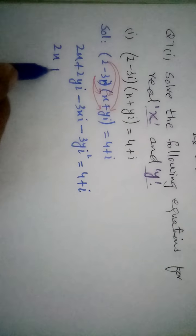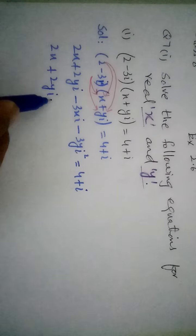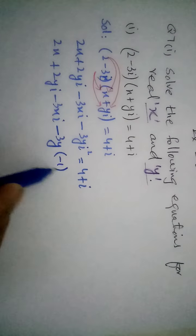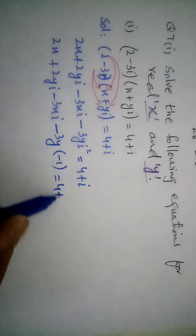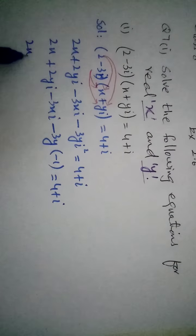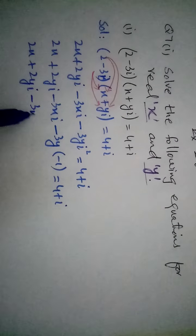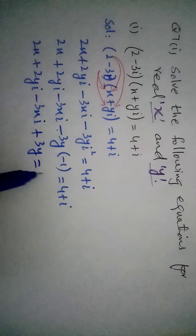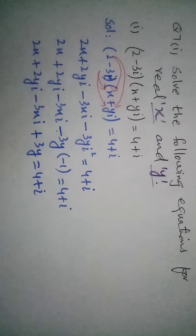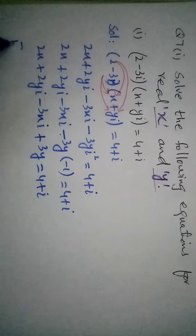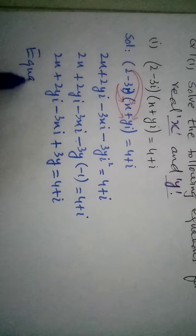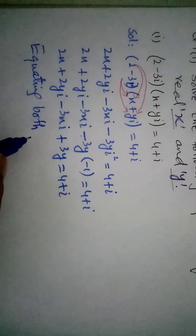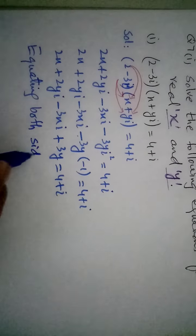And then 2x plus 2y iota minus 3x iota minus 3y iota square is equal to. Iota square ki value laga di. And now 2x plus 2y iota minus 3x iota, minus minus plus 3y is equal to 4 plus iota. Now equating both sides, equating dono side ko equal karne se, or corresponding entries ko equal lene se.